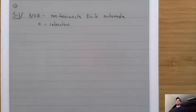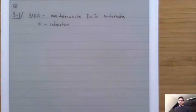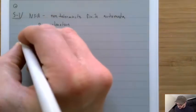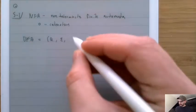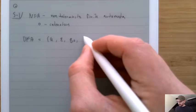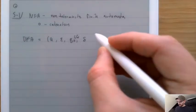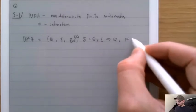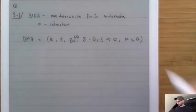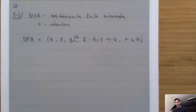To understand NFAs, we want to contrast them with DFAs, and it all comes down to this non-deterministic thing. Recall that a DFA was defined by a set of states Q, an alphabet sigma, a start state Q0, a transition function delta that took a Q and a sigma and returned a Q, and then F which was a subset of Q. NFAs are going to be like DFAs, but they're going to have two extra rules.